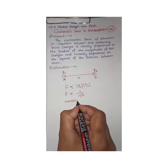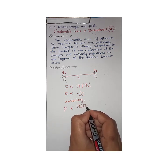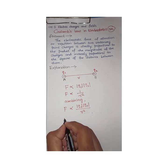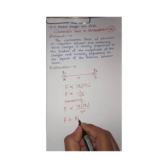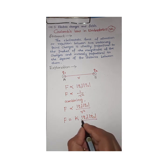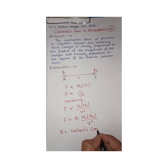Combining these two equations, F is directly proportional to |Q1|·|Q2| / r². To remove the proportionality symbol, we multiply by a constant k, giving: F = k · |Q1||Q2| / r². This k is called Coulomb's constant, or the proportionality constant.